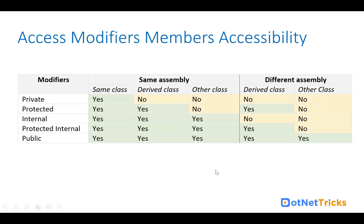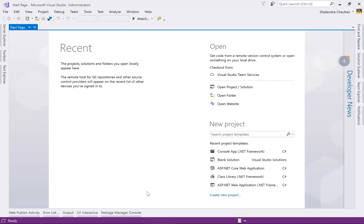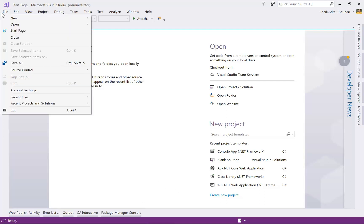This diagram clearly shows what access modifier members we can access in the same assembly and in a different assembly. Now let's understand all these access modifiers with examples. Here is my Visual Studio — let's create a blank solution. Go to New then Project.